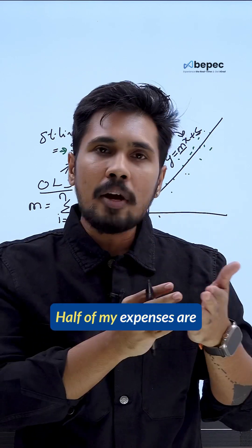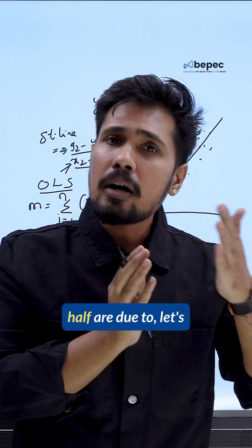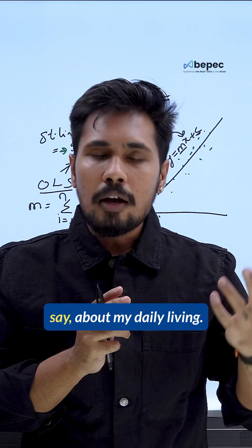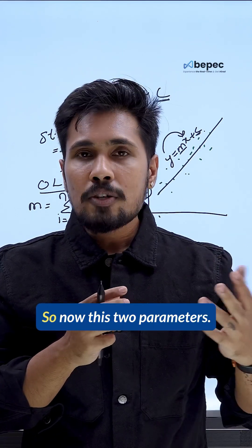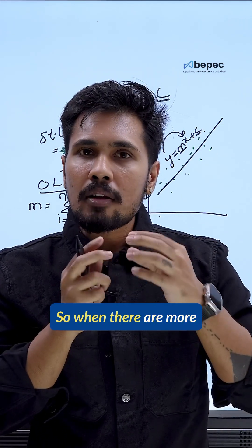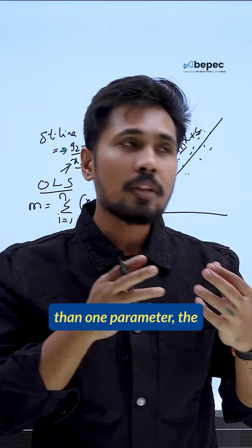Half of my expenses are due to groceries and half are due to, let's say, my daily living. So now, these two parameters. When there are more than one parameter, the equation is not this. We will be using another equation.